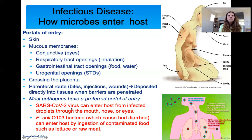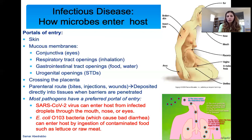SARS-CoV-2 does not enter through urogenital openings — you cannot get it from urine or sex. E. coli O157 bacteria, which causes bad diarrhea, enters through ingesting contaminated food. SARS-CoV-2 enters through respiratory droplets. The take-home message is every microbe has a preferred portal of entry.